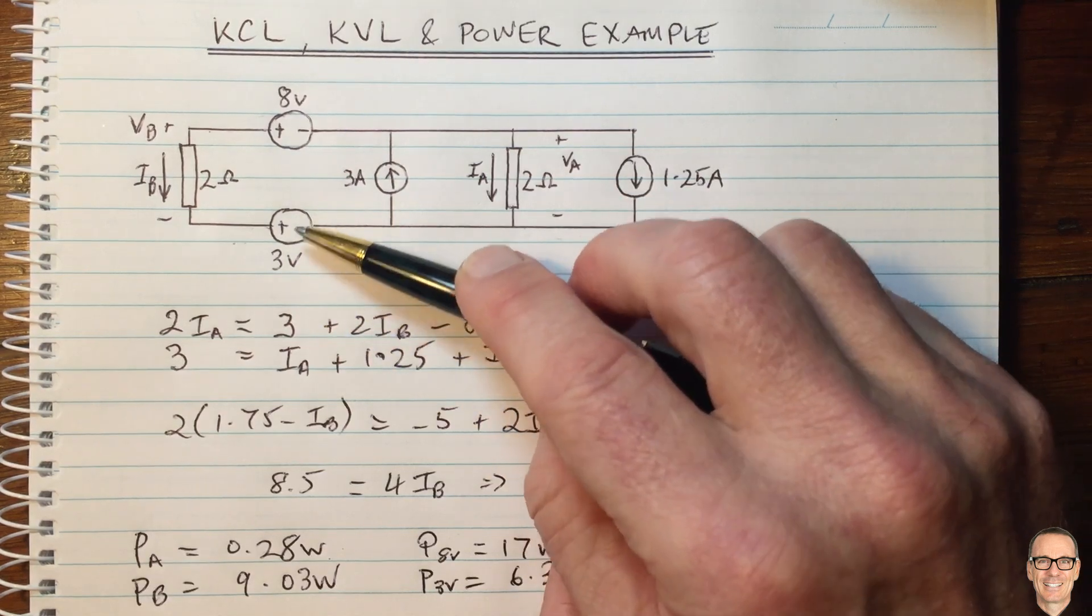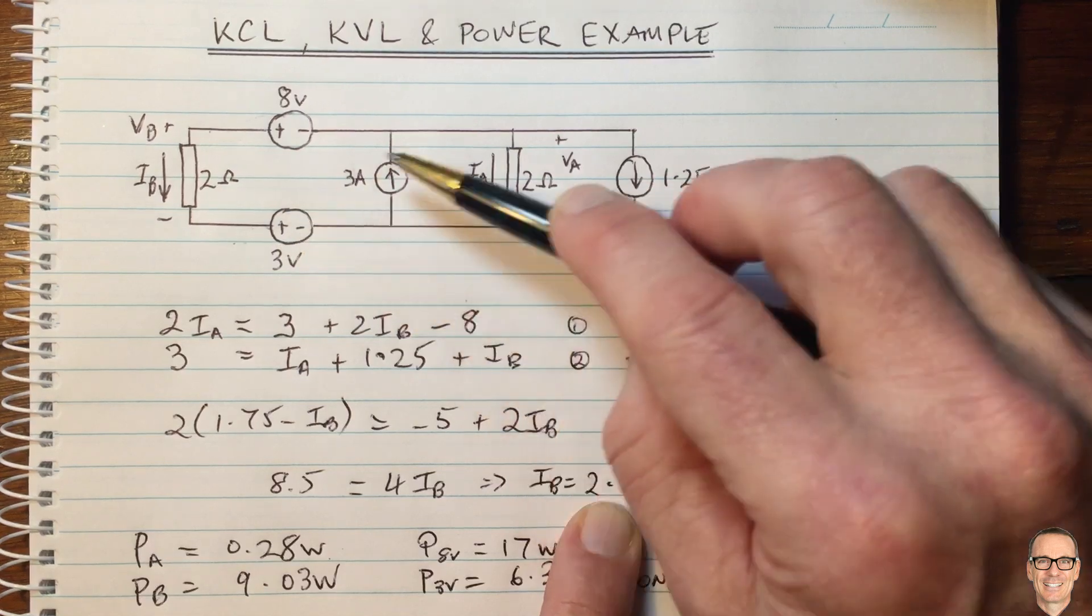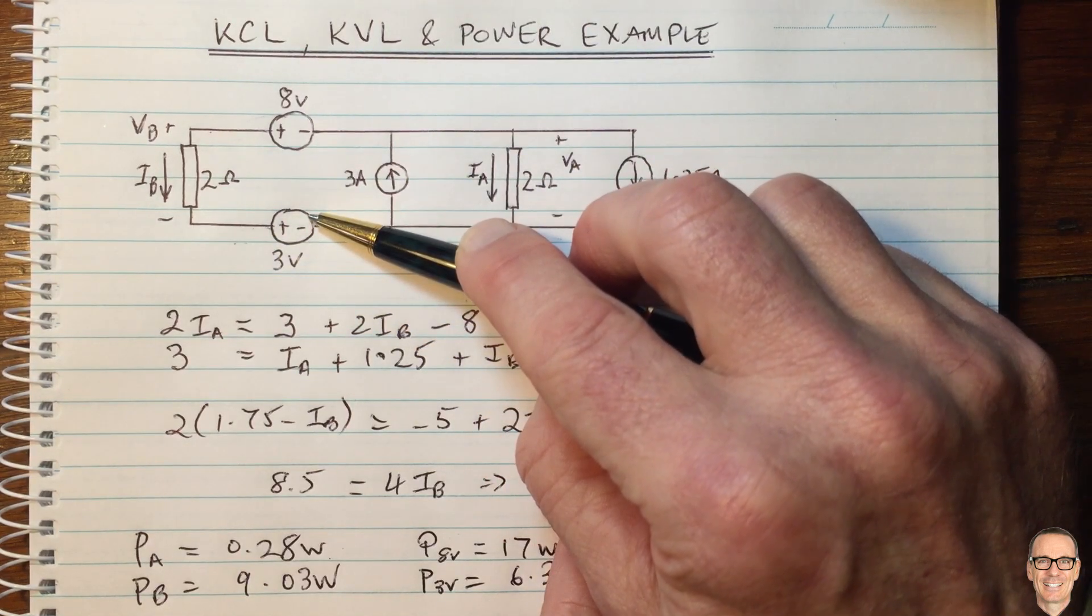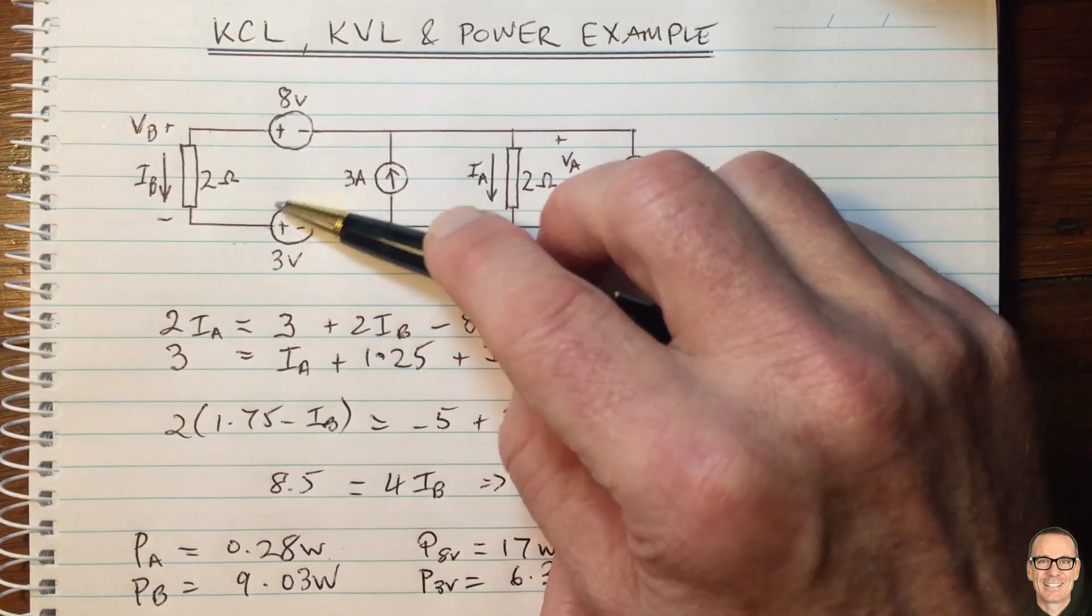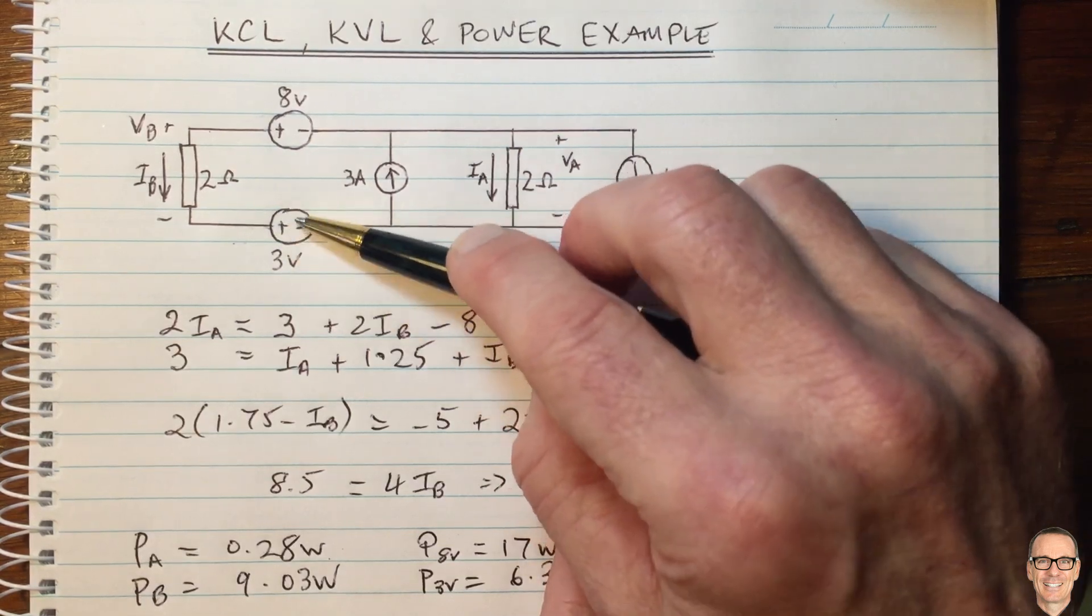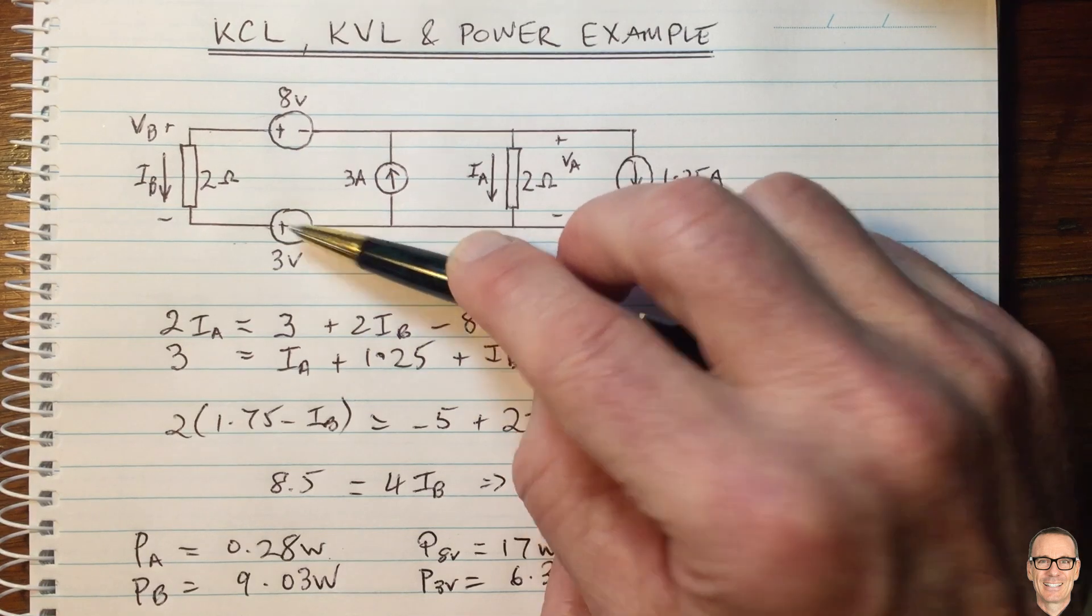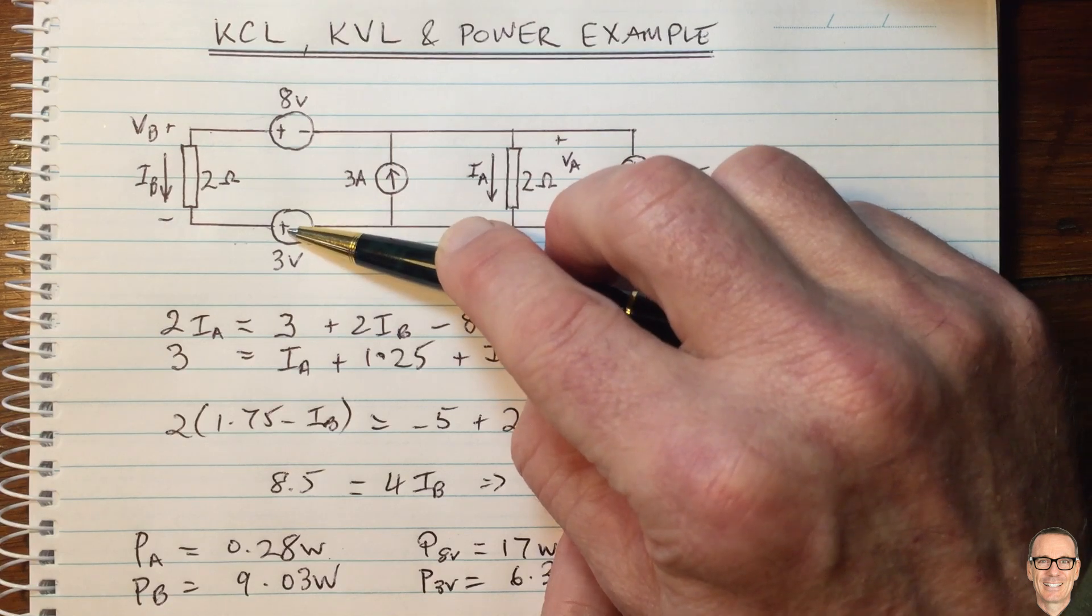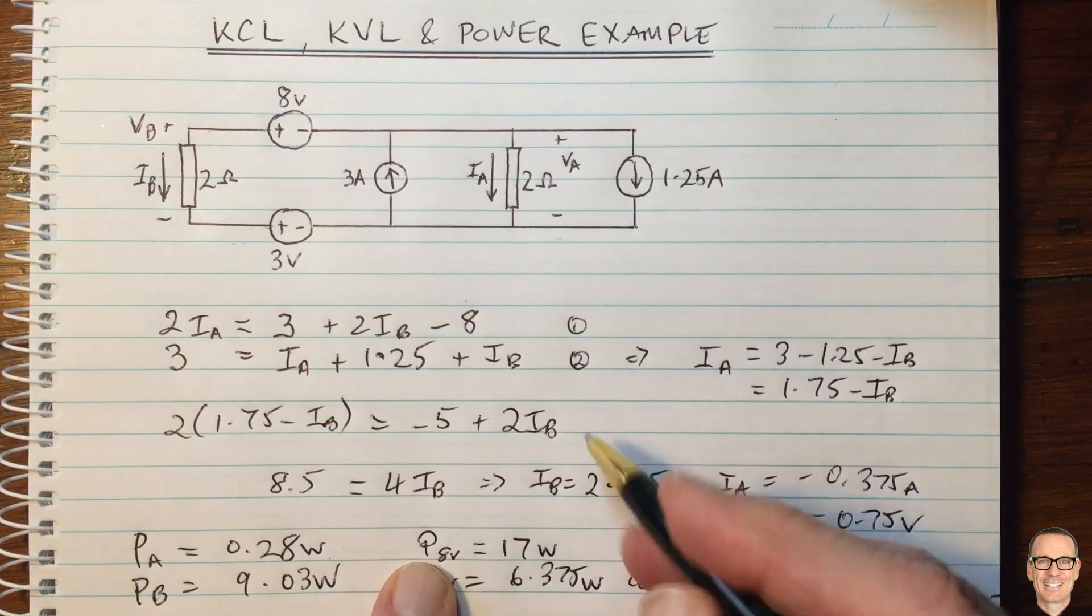And so, this is often a confusion, is that people think always that these components, when drawn like this, that they are supplies of power. In this case, it is actually consuming power. So there's an electronic circuit. This is a model that represents an electronic circuit. That electronic circuit in this scenario is keeping the voltage exactly pinned at 3 volts. And, actually, what's happening is current is coming into that circuit through the positive terminal. So power is actually being consumed. This one here is being supplied.